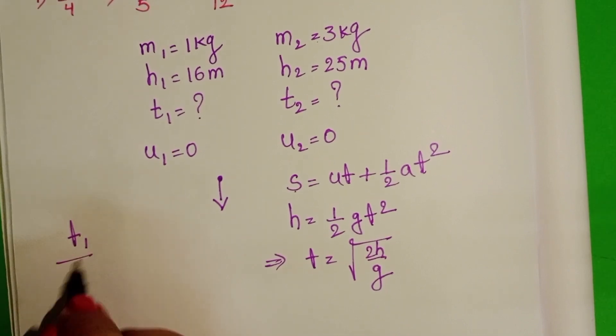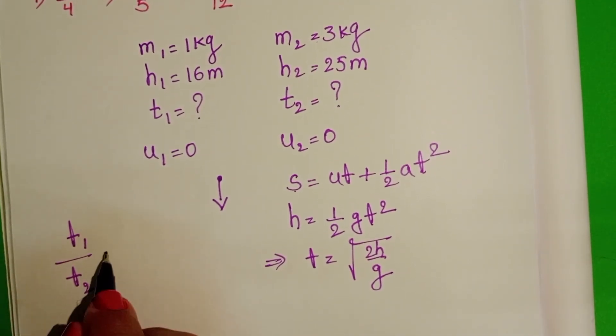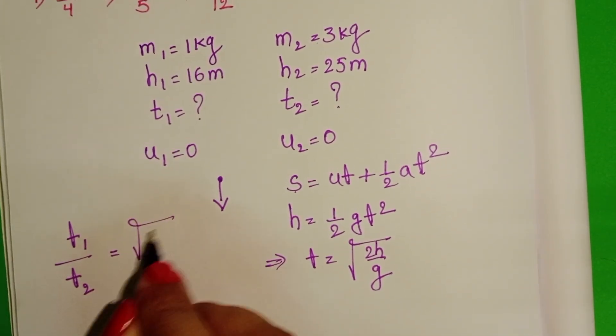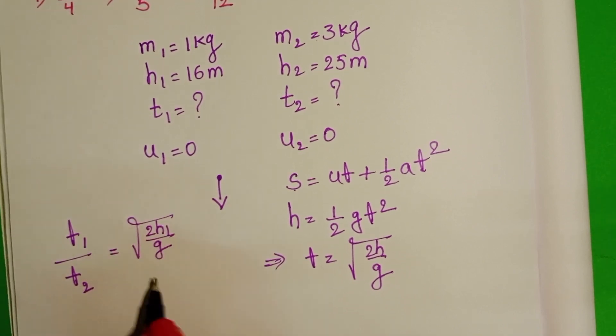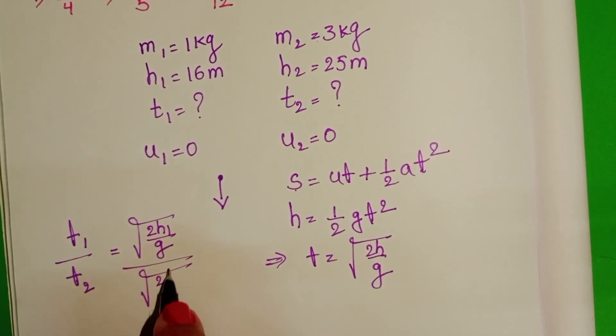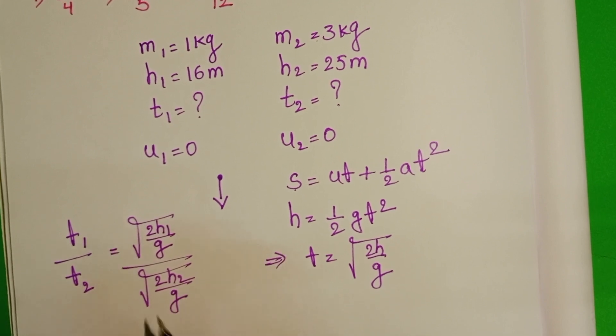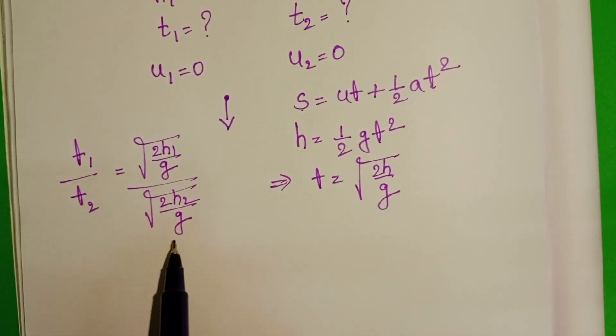We have to find out the ratio of the time: T1 by T2 equals square root of 2H1 by g divided by square root of 2H2 by g. Here 2 and g are constants.